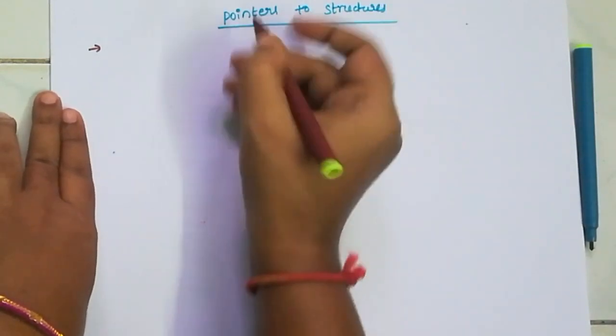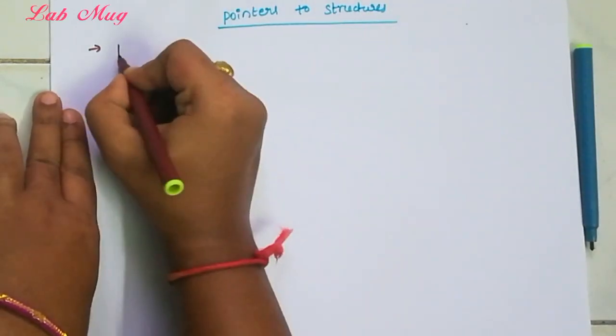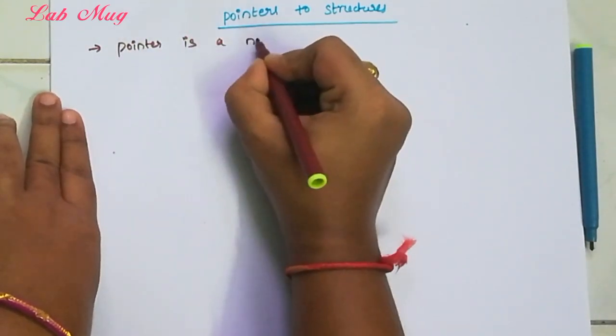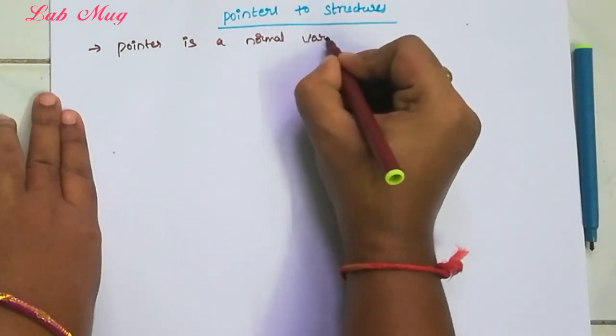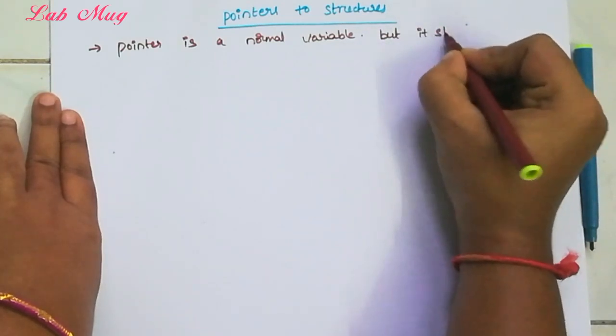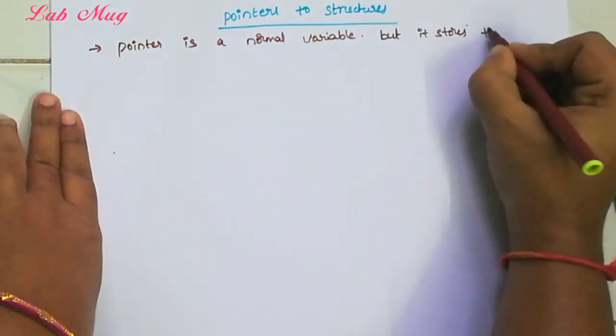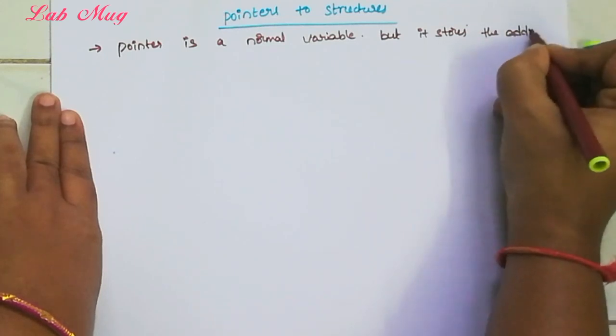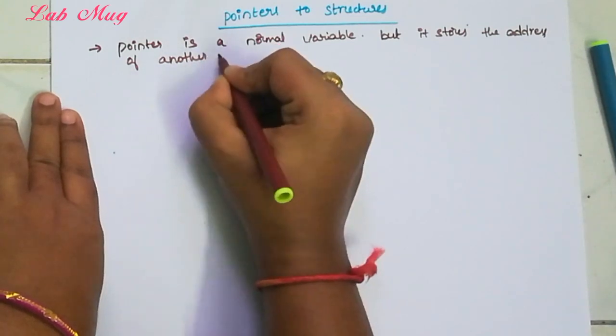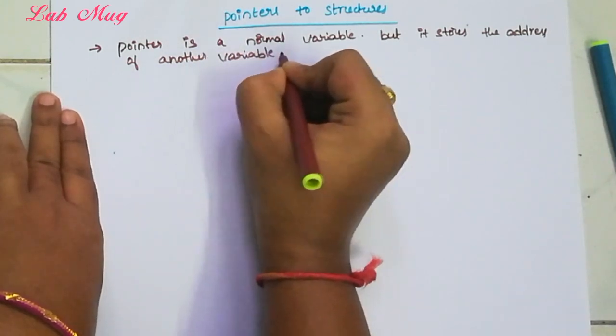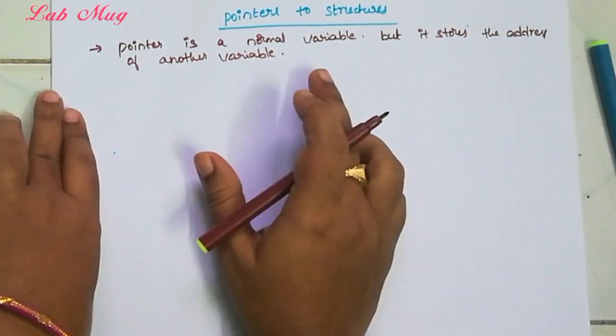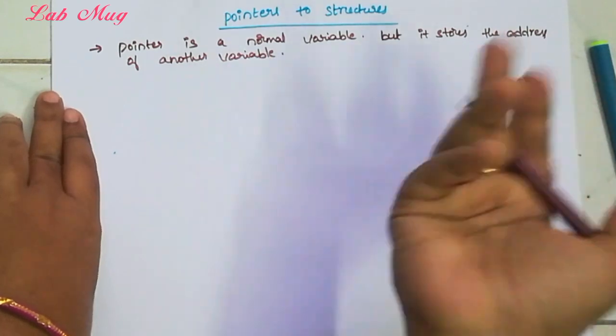A pointer is a normal variable, but it stores the address of another variable. So that is the difference between pointer and normal variable.